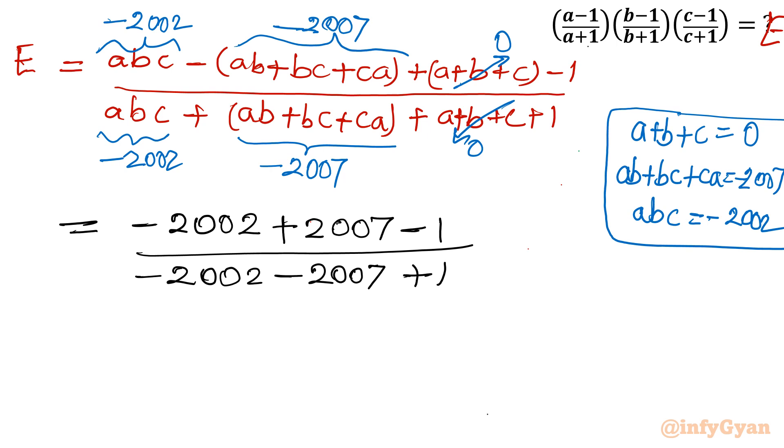2007 minus 2002 is 4. Divided by -2002 - 2007 plus 1 is -4008. Once I divide, I will write my answer as -1/1002. This is our final answer.